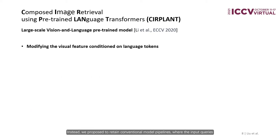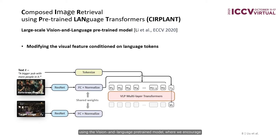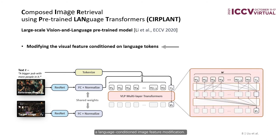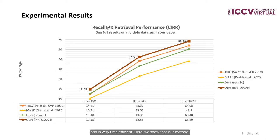Instead, we propose to retain conventional model pipelines, where the input queries are firstly processed and then jointly embedded using the vision and language pre-trained model, where we encourage a language-conditioned image feature modification. The modified visual feature is later compared with the features of candidate images through L2 norm, which does not involve learning and is very time efficient. Here we show that our method, although relatively simple, outperforms existing methods on recall-at-top key metrics, which demonstrates the benefit of large-scale pre-training.